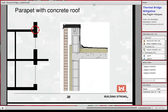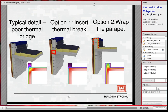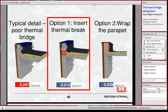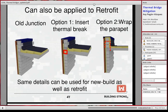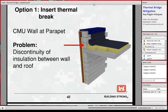Now moving to the sequencing. We're going to take the parapet example shown before. Essentially, we have two options: the option of thermal breaking the parapet heat flow path, and the option of wrapping insulation around the parapet. Let's start with option one. Ideally, this would be better done with new construction, but I'll show steps for a retrofit. We have this continuity of the insulation of the building envelope at that particular section of the parapet, and we are going to insert a thermal break here.